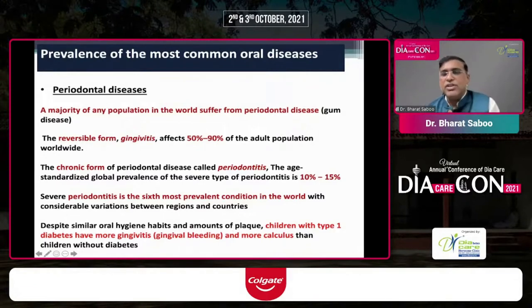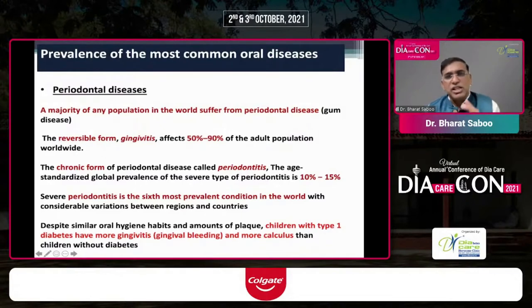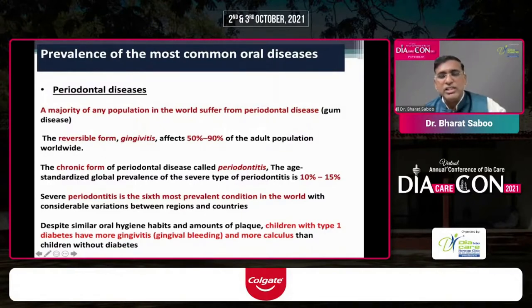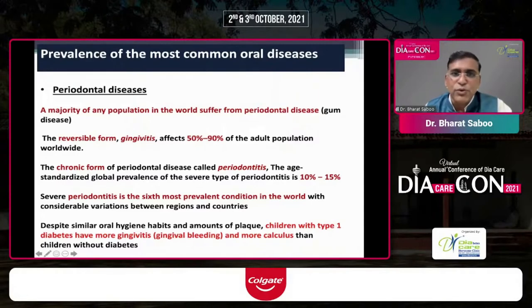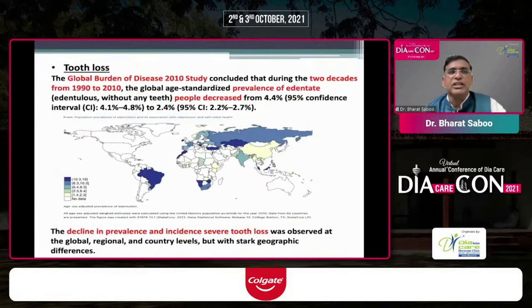Children with type 1 diabetes have more gingivitis, specifically gingival bleeding and calculus, than their peers who don't have diabetes.